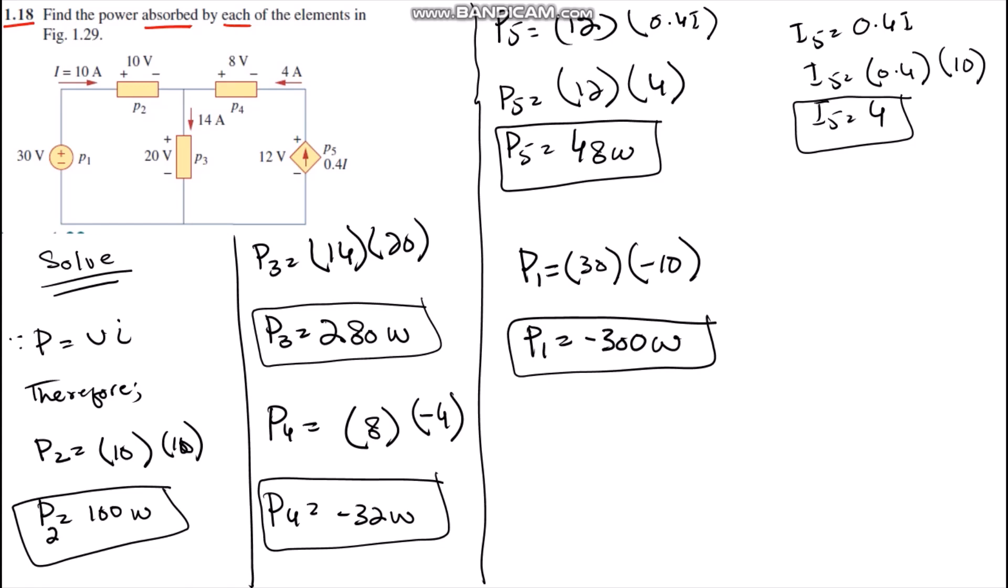We know the equation of power, which is P = VI. Therefore, we simply substitute the values of each element's voltage and current. P2 equals 10 multiplied by 10. Element 2 has a positive voltage of 10 volts and an entering positive current of 10 amperes, so we get 100 watts.